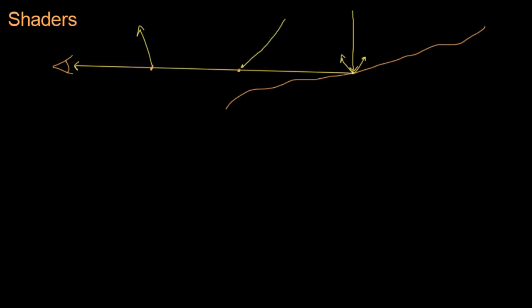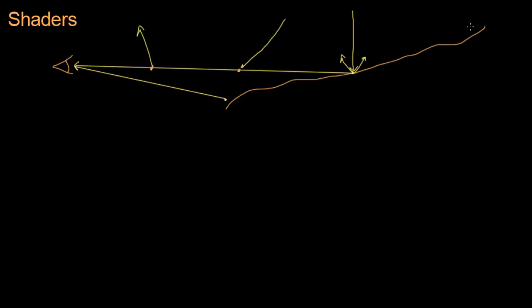The closer the thing you're rendering is to the eye, the less chance there is for those particles to refract the light. And the farther away you are, the more chance there is. So clearly, how much fog there is in a scene is a function of how far our eye is from the thing that we're rendering. Let's see if we can get some kind of equation which can represent how much fog we should color a certain pixel.